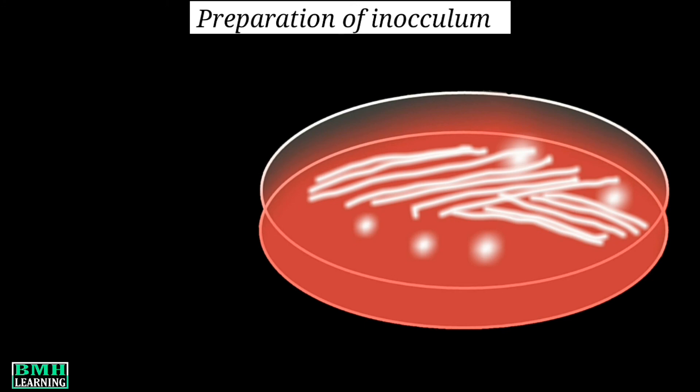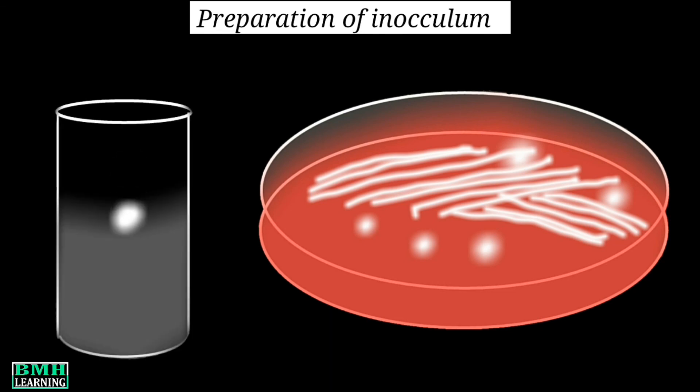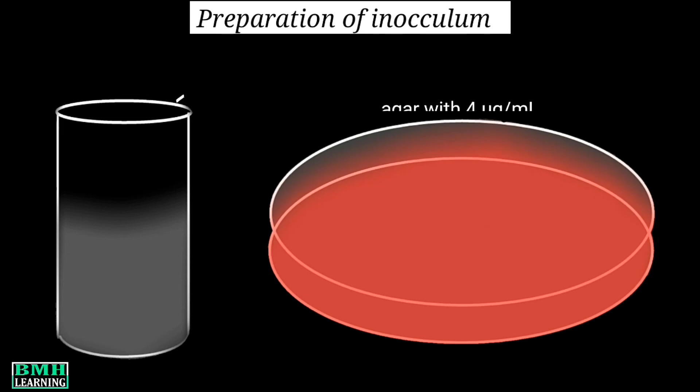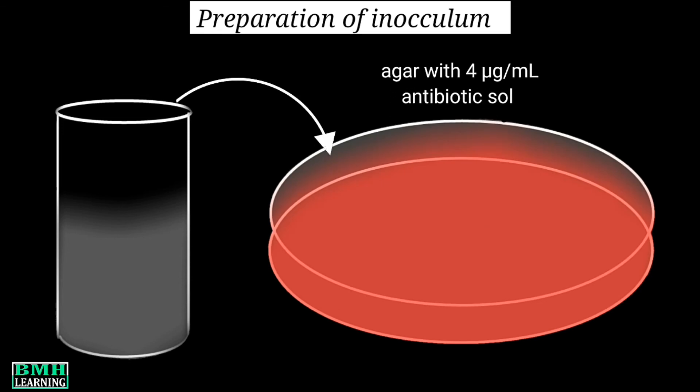The next step is preparation of the inoculum. We use an overnight broth culture of the required bacteria, from which clearly visible, well-formed bacterial colonies can be seen. We pick the colonies and add them into distilled water to make a suspension. Remember to further dilute the bacterial suspension depending on the type of bacteria being tested. Then we inoculate 1 to 2 microliters of this inoculum onto the agar surface.